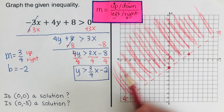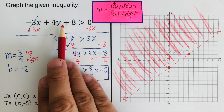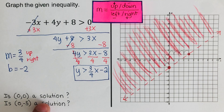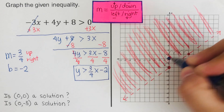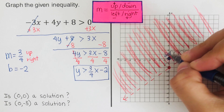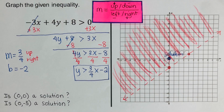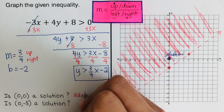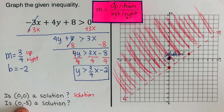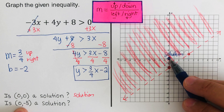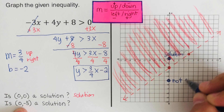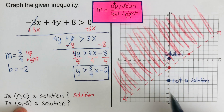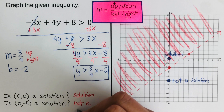The shaded part is the solution to this inequality. The point (0, 0) is in the shaded portion, so it is a solution. The point (0, -5) is in the unshaded portion, so it is not a solution.